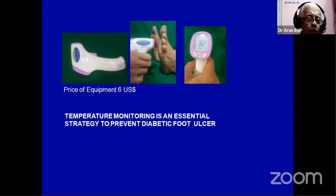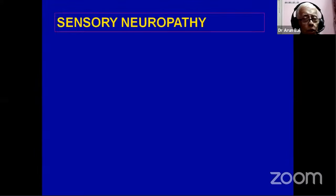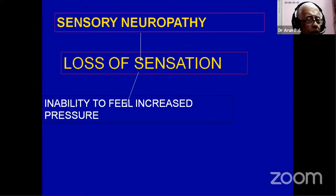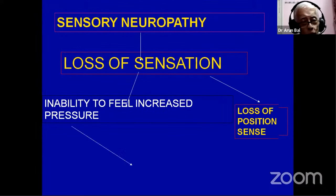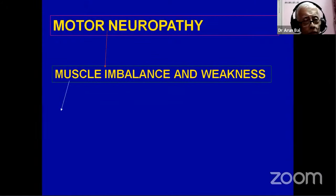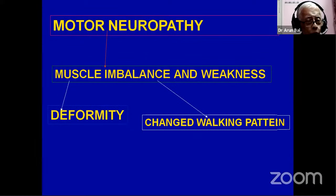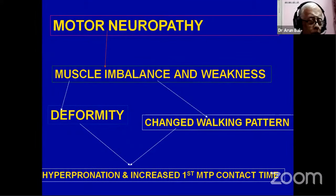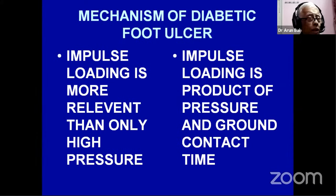A simple thermometer — now very popular from the pandemic — can teach the patient to measure temperature and then change the walking schedule accordingly. Sensory neuropathy causes loss of sensation, inability to feel increased pressure, loss of position sense, and hyperpronation. Motor neuropathy causes muscle imbalance, weakness, deformity, changed walking pattern, and increased ground contact time. The foot remains on the ground at the first MTP joint for longer than a normal walking cycle — this is the biomechanical parameter, known as impulse loading, which decides whether the skin will break. Impulse loading is pressure multiplied by ground contact time.